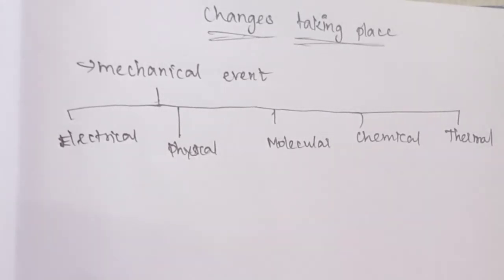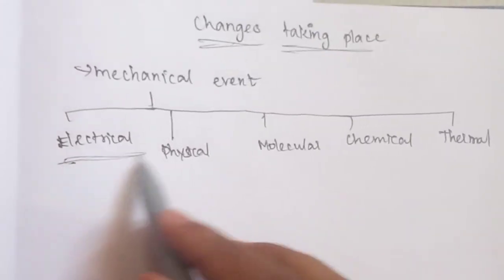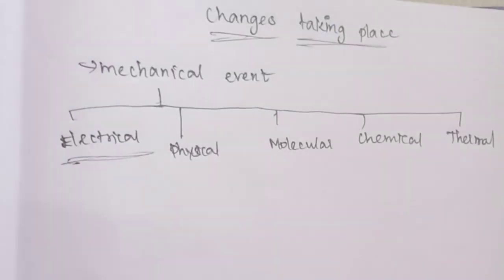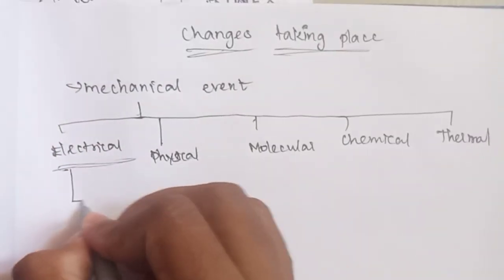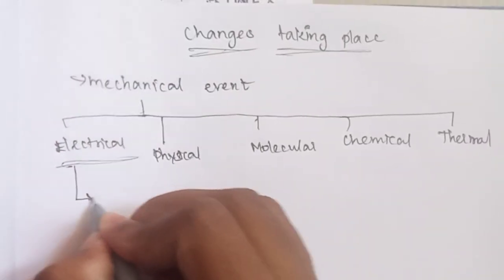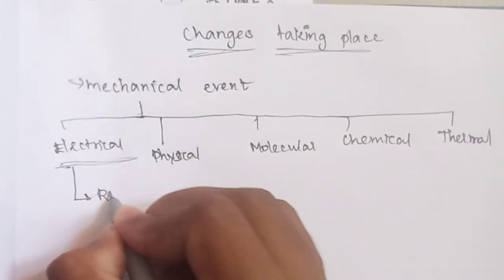We will talk about electrical changes in our video. With the electrical event, we will talk about the muscle resting and active states. Then, it will be called electronic potential and resting membrane potential.